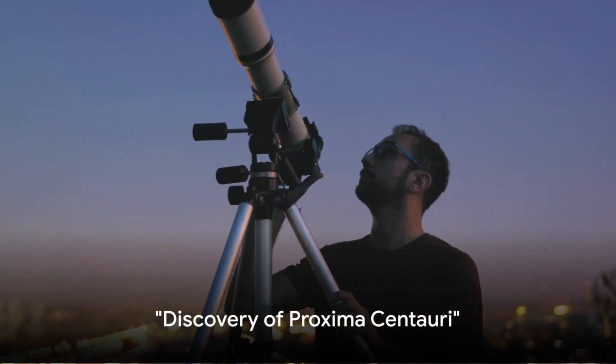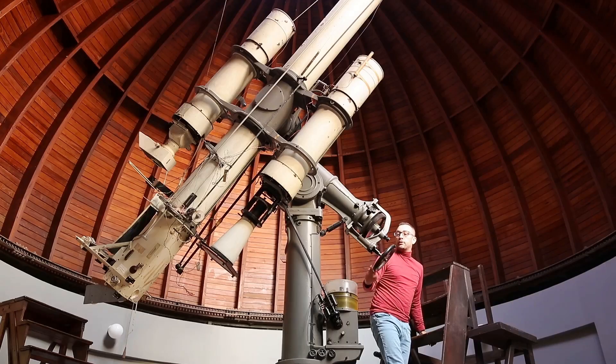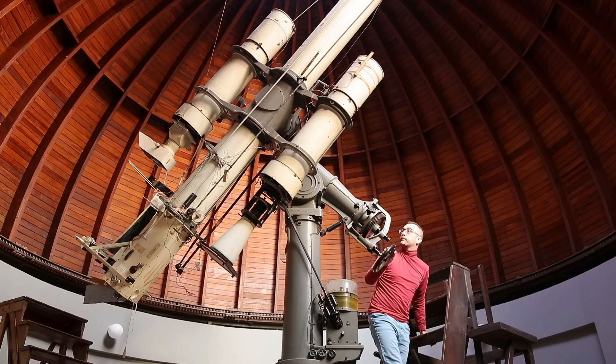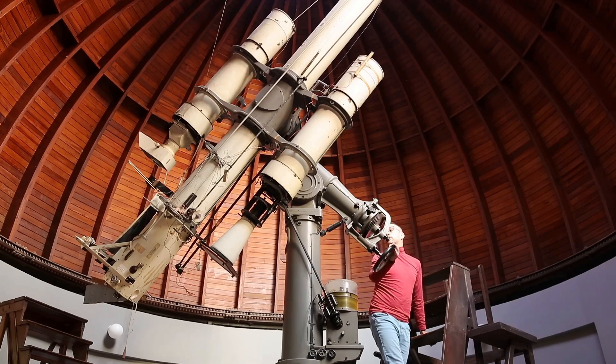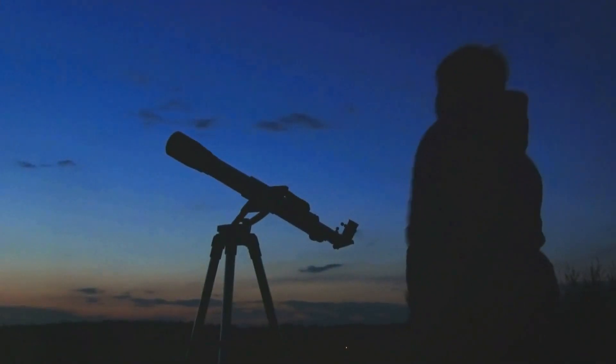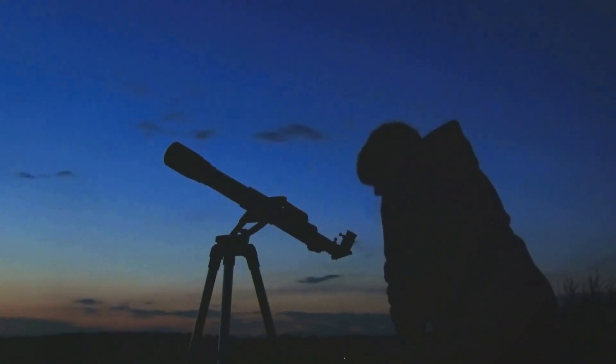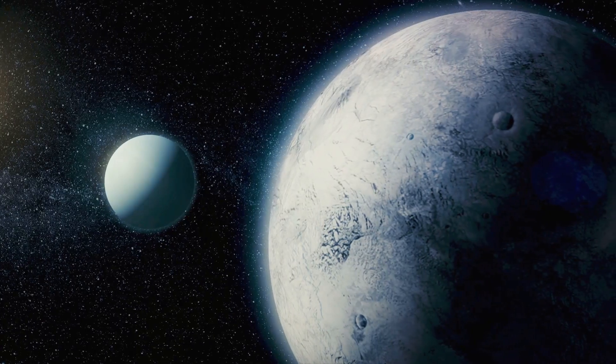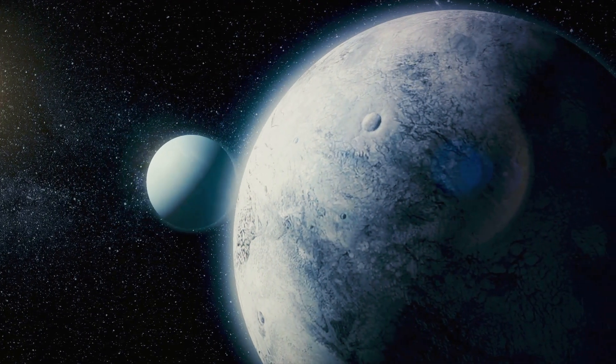Our story begins in the year 1915 with the discovery of a faint star. In that year, a Scottish astronomer by the name of Robert Innes was looking through his telescope from the Union Observatory in Johannesburg, South Africa. He noticed a dim star that didn't quite fit the celestial pattern of the night sky. This faint glimmer of light he would later name Proxima Centauri. Proxima Centauri, Latin for nearest of Centaurus, was indeed a fitting name.